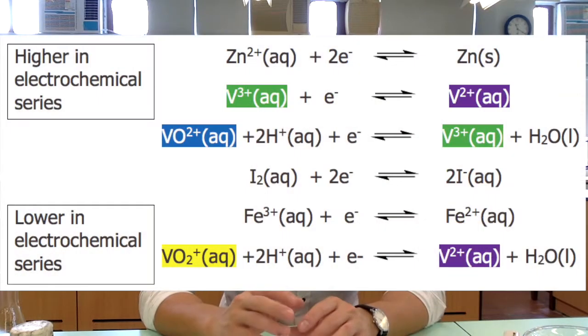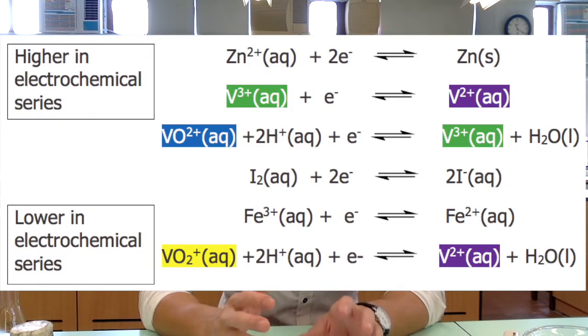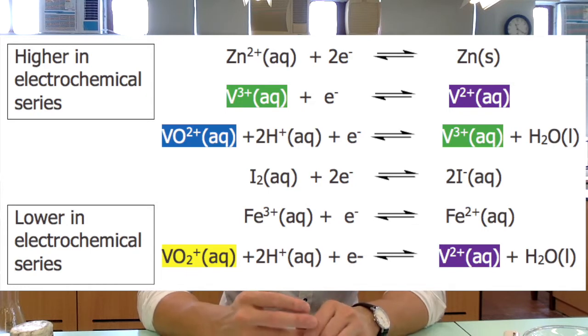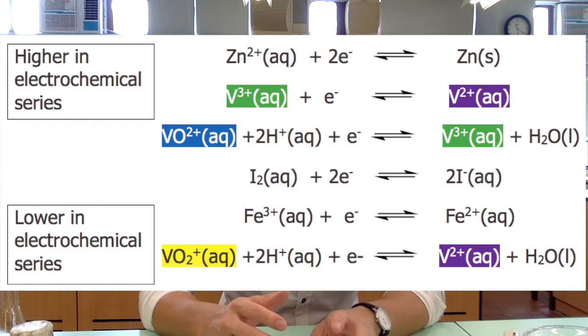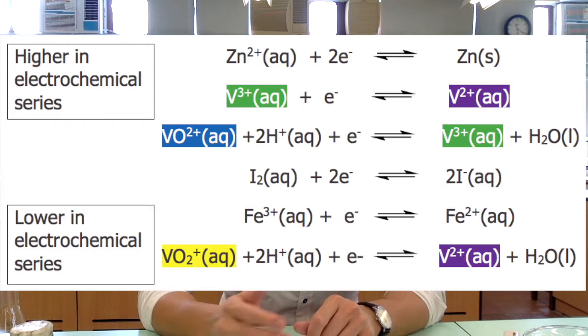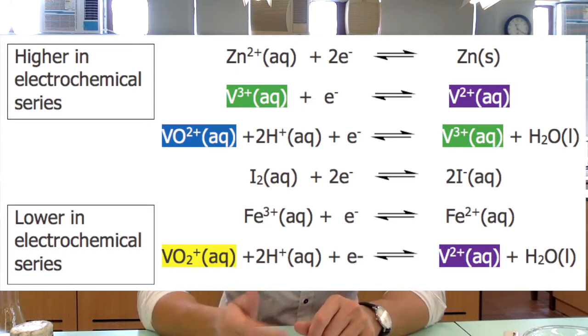These are the four vanadium-containing species we are going to investigate. Now, looking at the electrochemical series: at the bottom left corner, we see the dioxo-vanadium(5) ion — it is the strongest oxidizing agent among the species here. At the top right-hand corner, you see zinc, which is definitely the strongest reducing agent.